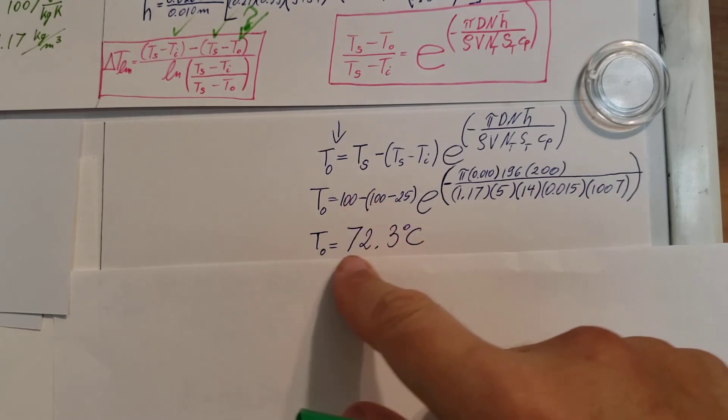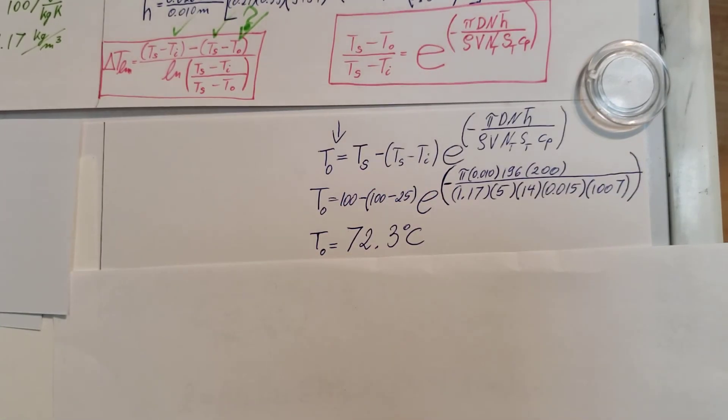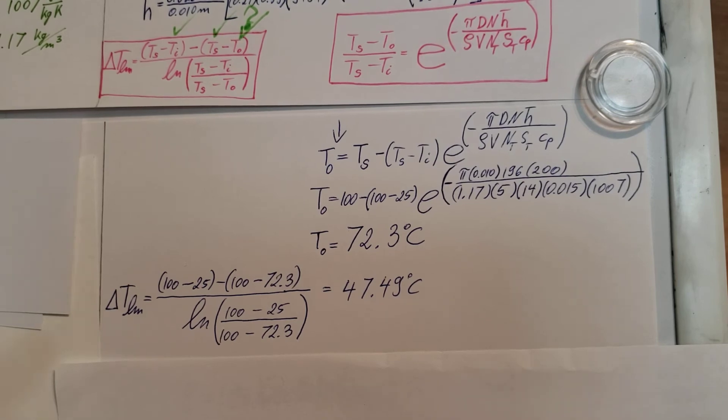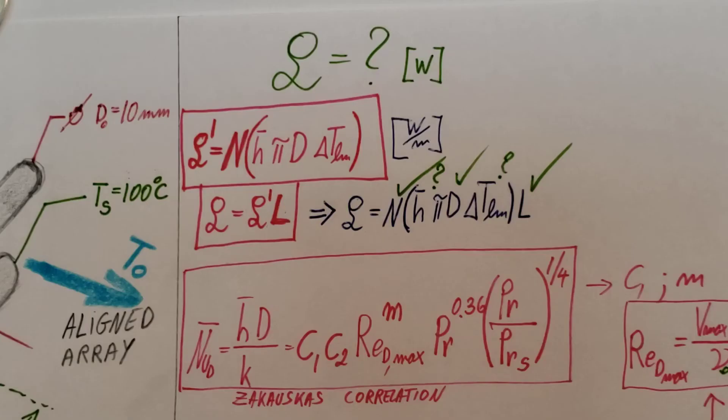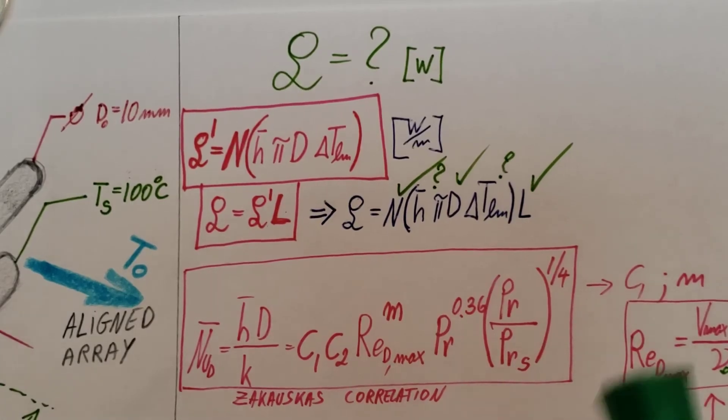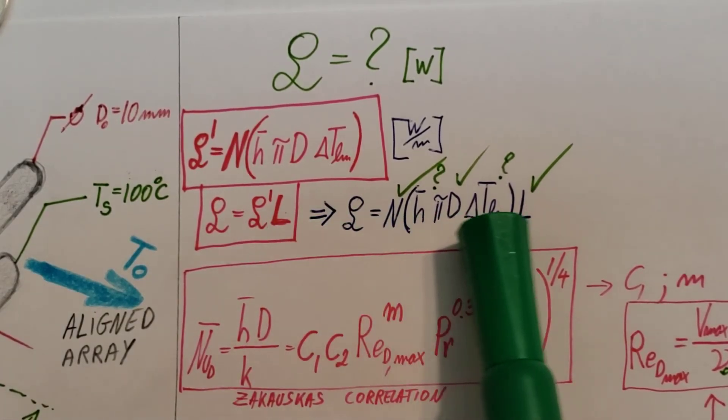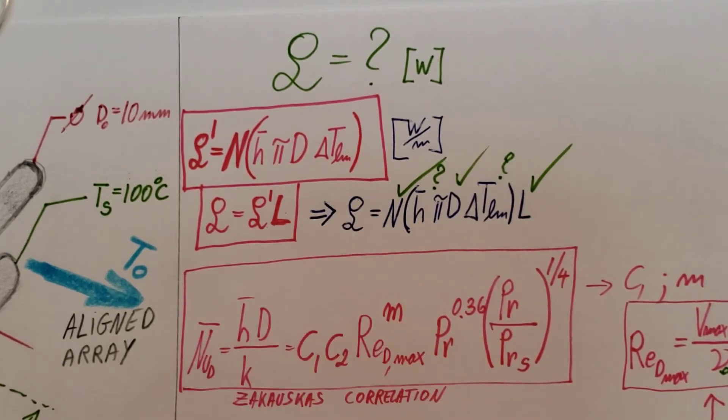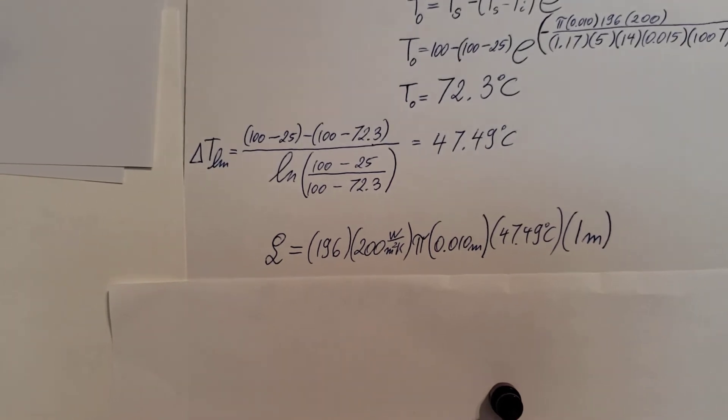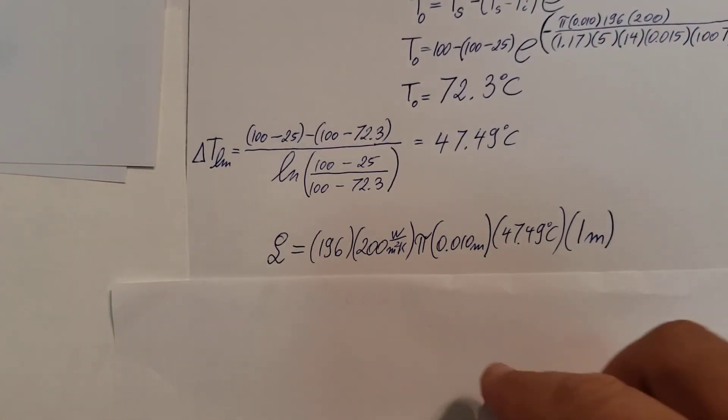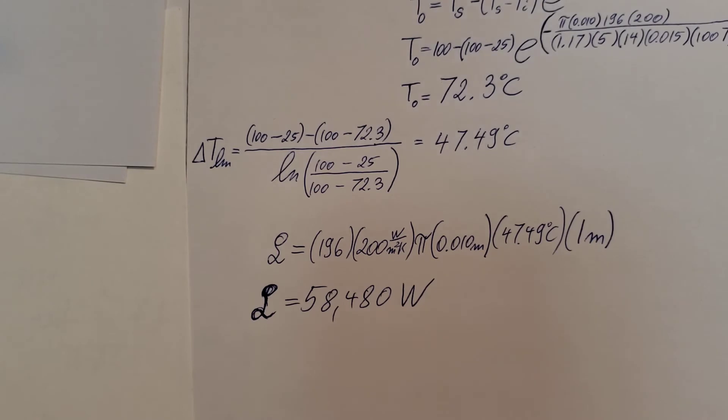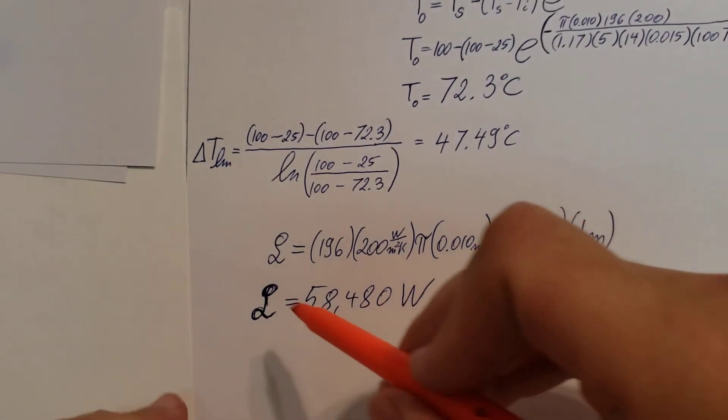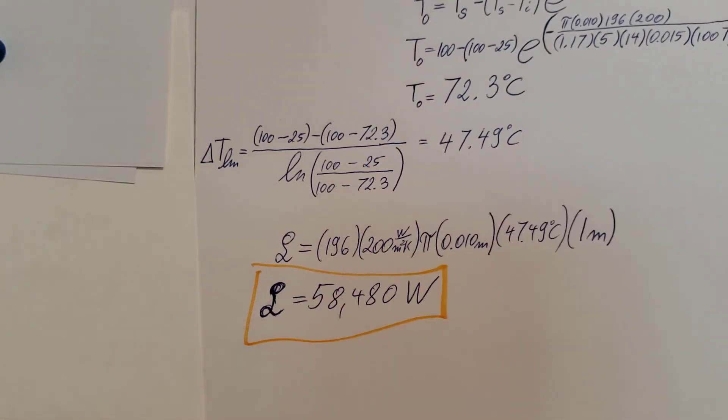We go ahead and calculate this and we can find an exit temperature TO equals 72.3 Celsius. Now we can come back here and find our log mean temperature difference. Here it is. We find 47.49 degrees Celsius. Now that we finally have everything we need for this formula, we can finally focus on our heat rate. I went ahead, plugged everything in, and after calculating we can find our sought-after value of 58,480 watts.